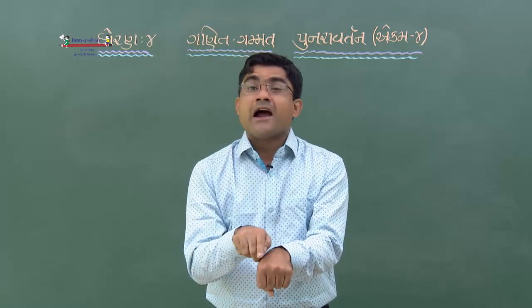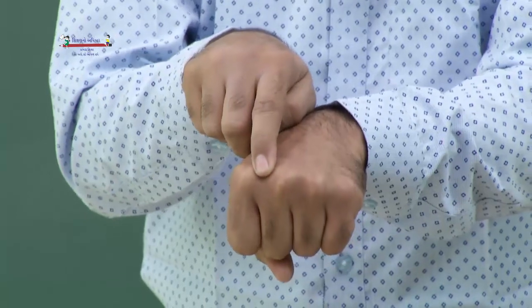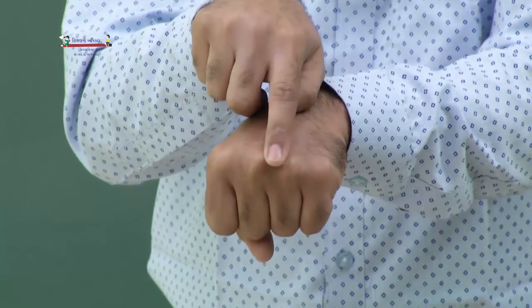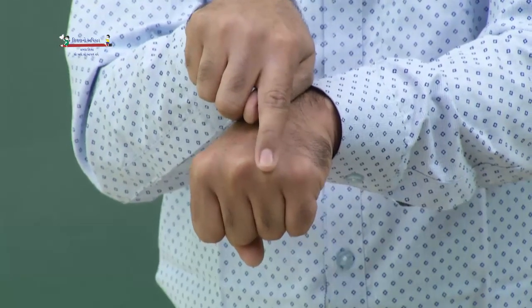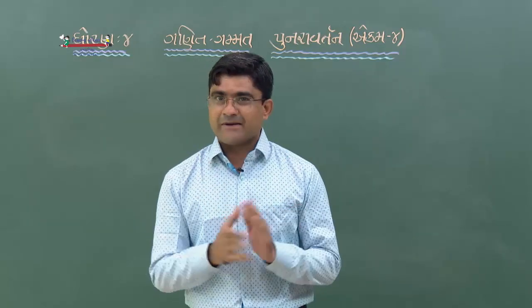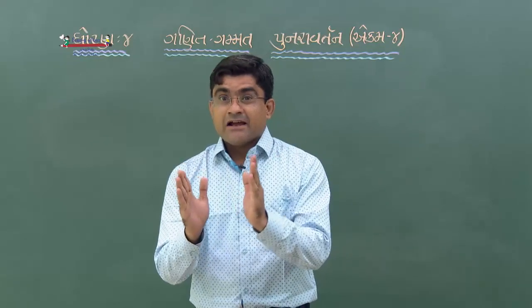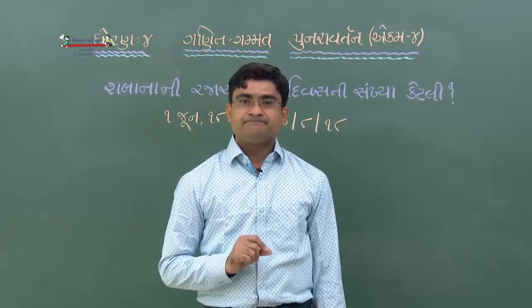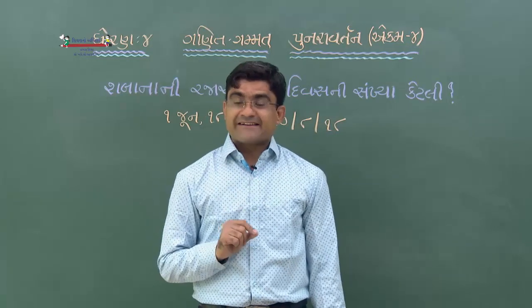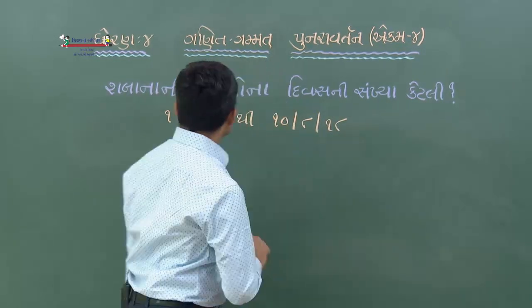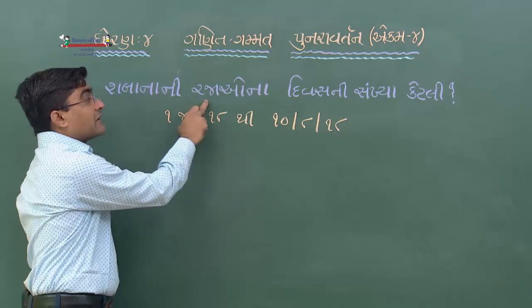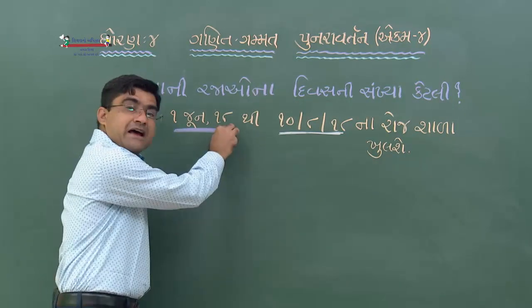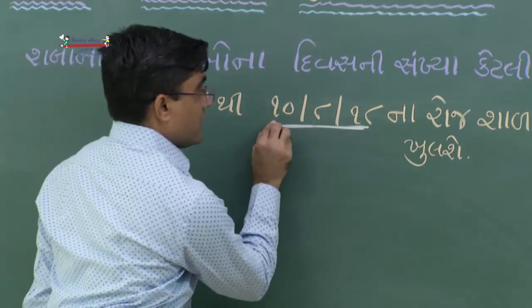ઓગસ્ટ 31, સપ્ટેમ્બર 30, ઓક્ટોબર 31, નવેમ્બર 30, ડિસેમ્બર 31. સાબાશ! ફાવ્યું ને? તો તમે બે તારીખ વચ્ચે કેટલા દિવસ છે તે સરળતાથી ગણી શકો. વધ્ધ - સભાનાની રજાઓ 1 જૂન 2018 થી શરૂ.